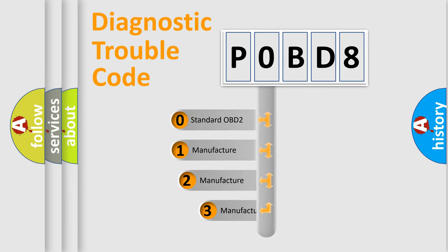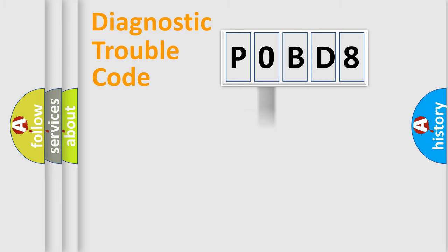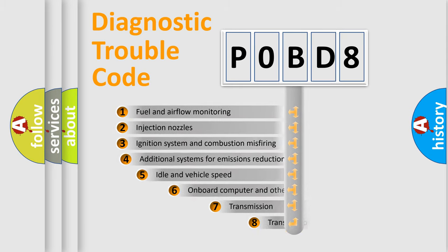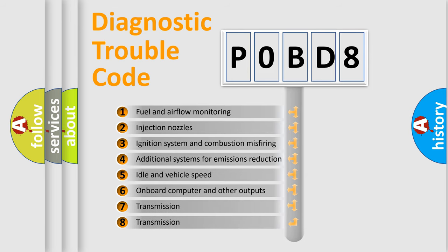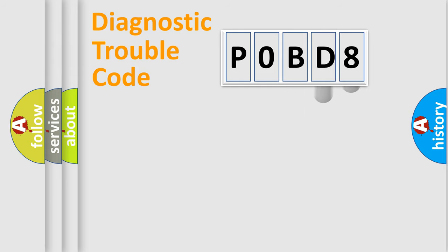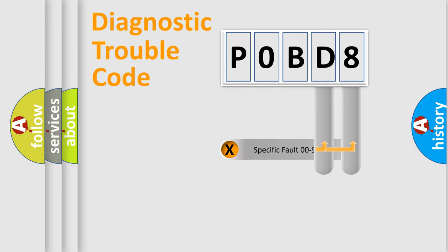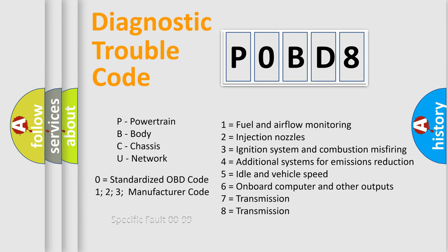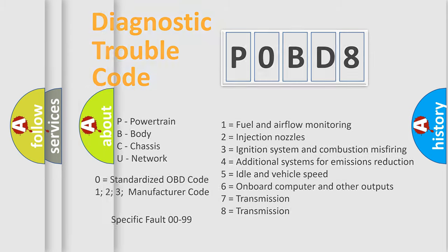If the second character is expressed as zero, it is a standardized error. In the case of numbers 1, 2, or 3, it is a more specific expression of a car-specific error. The third character specifies a subset of errors. This distribution is valid only for the standardized DTC code. Only the last two characters define the specific fault of the group, and this division is valid only if the second character code is expressed by the number zero.